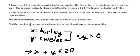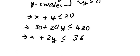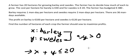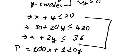The question asks us to find the maximum profit. The objective function is P equals 100x plus 120y. We need to find the maximum profit by plotting the constraints on a graph.